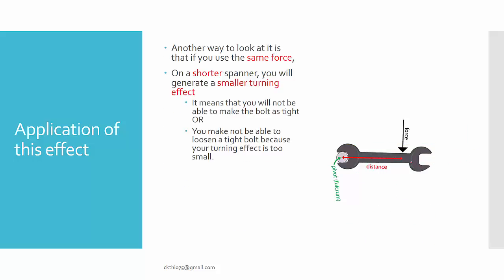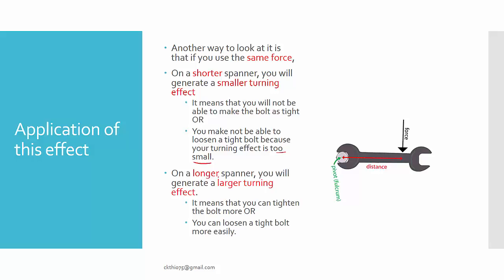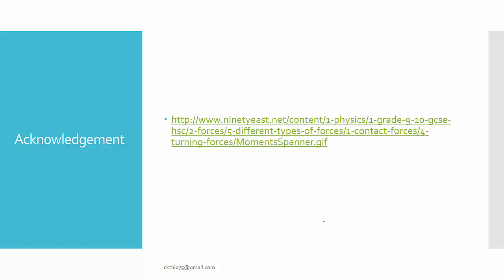Using a shorter spanner with the same force generates a smaller turning effect, which may not be enough to loosen a tight bolt. With a longer spanner, the same force produces a larger turning effect because the distance is greater. So it's always better to use a longer spanner if you want to make the task easier. That's all for now.